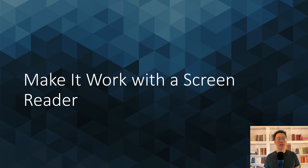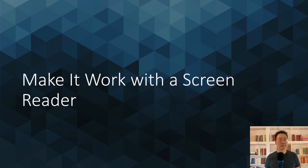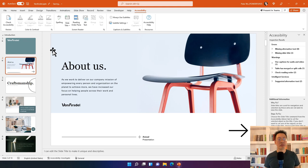Now, let's look at how to make your presentation work with a screen reader. People with very low or no vision rely on a screen reader to understand content, but the content needs a meaningful and logical structure, order, and textual descriptions. Screen reader users rely on slide titles as they navigate through the presentation to figure out where they are. As they go from slide to slide, the title gets read, and without a title they can easily lose track.